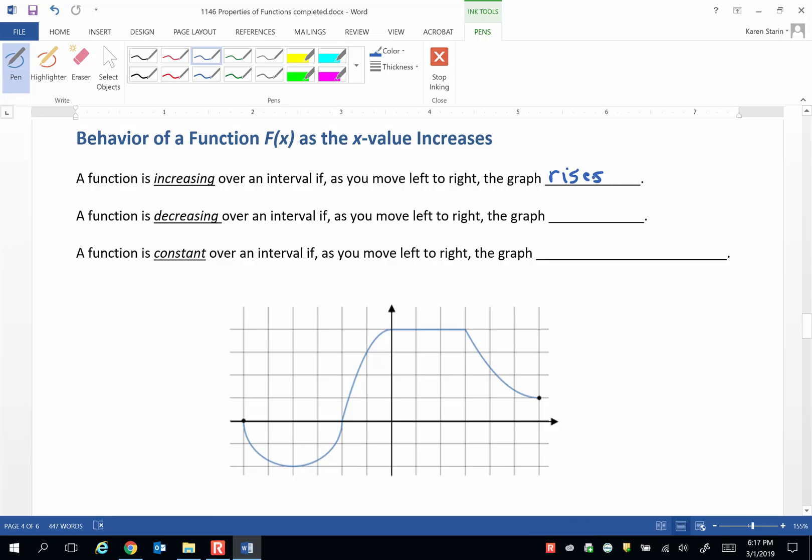We call a function decreasing over an interval if, as you move left to right, the graph falls. And finally, we call a function constant over an interval as you move left to right. The graph remains horizontal.